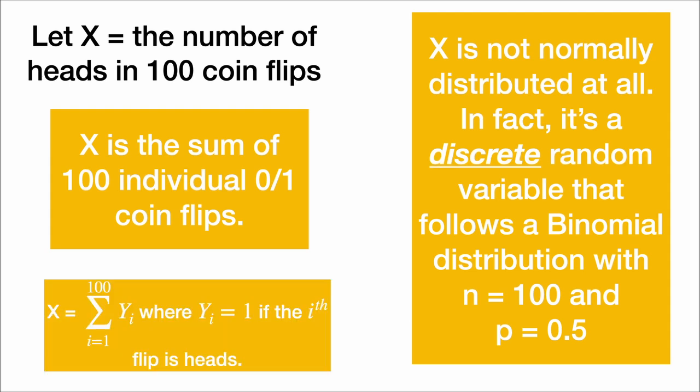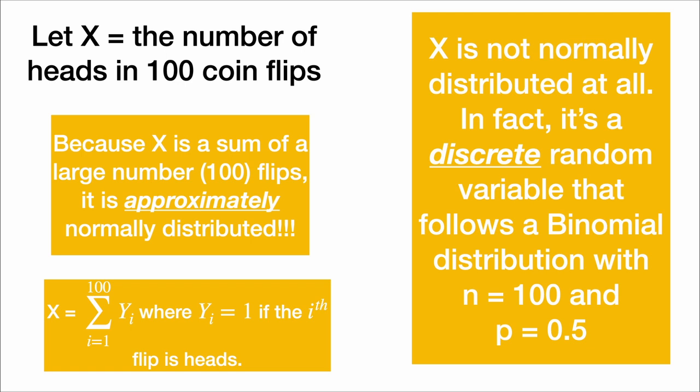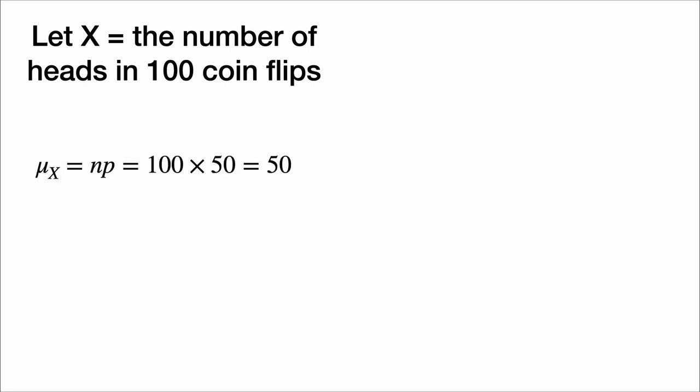But we can view x as the sum of 100 individual coin flips, whose outcome is either 0, tails, or 1, heads. In more mathematical terms, we could say that x is the sum of the y_i, where y_i is 1 if the ith flip is heads. The y's here are called Bernoulli random variables. And because x is a sum of a large number of Bernoulli random variables, it is approximately normally distributed.